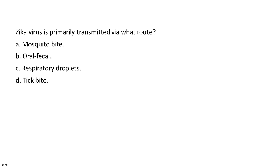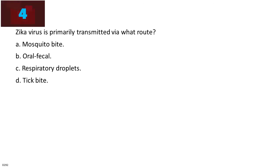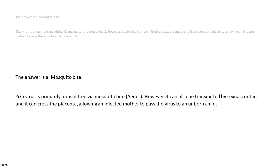Zika virus is primarily transmitted via what route? A. Mosquito bite. B. Oral-fecal. C. Respiratory droplets. D. Tick bite. The answer is A. Mosquito bite. Zika virus is primarily transmitted via mosquito bite (Aedes). However, it can also be transmitted by sexual contact, and it can cross the placenta, allowing an infected mother to pass the virus to an unborn child.